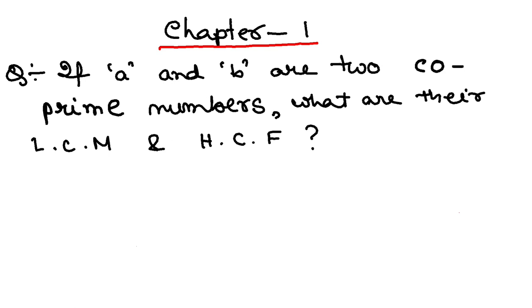The next question is similar: if A and B are two co-prime numbers, what are their LCM and HCF? What is the meaning of the term co-prime? Co-prime means two numbers which are prime to each other - that means they do not have anything common apart from 1.